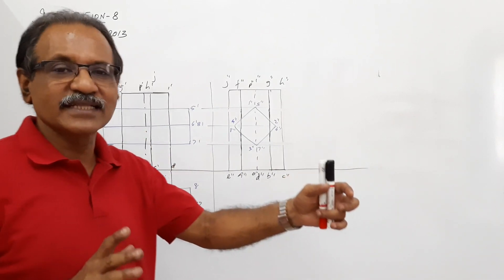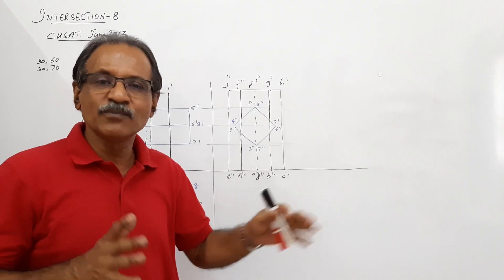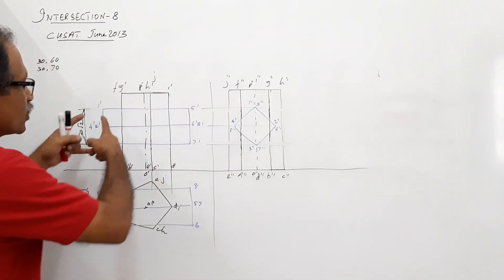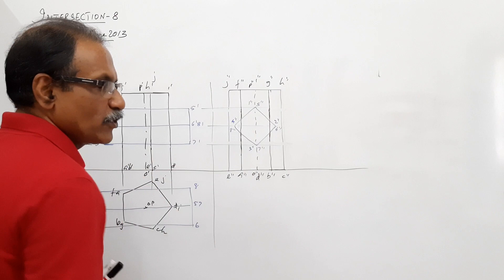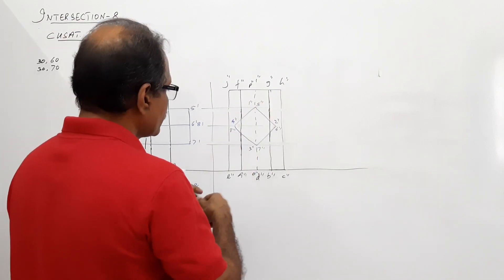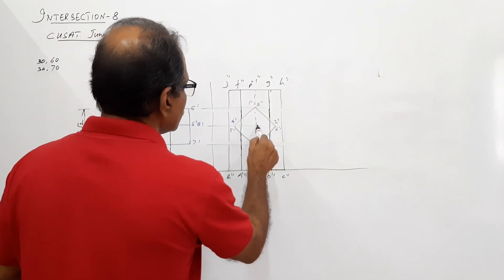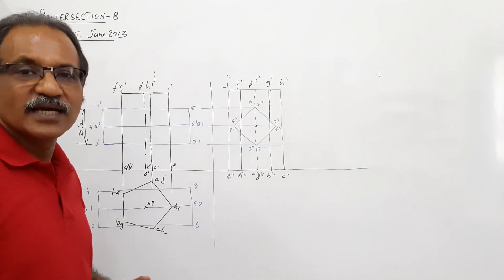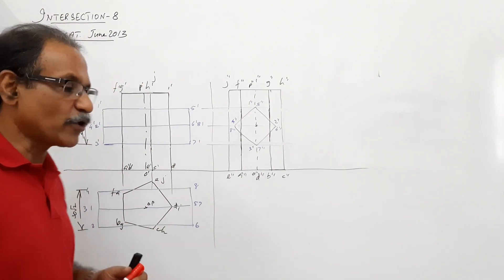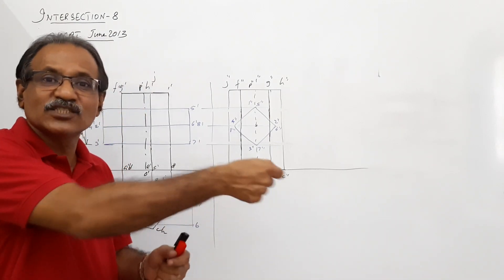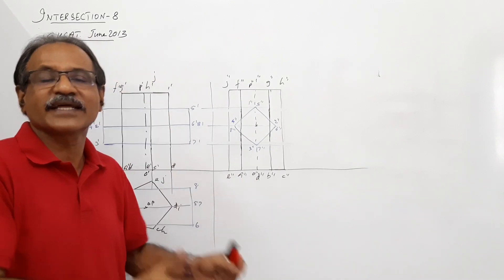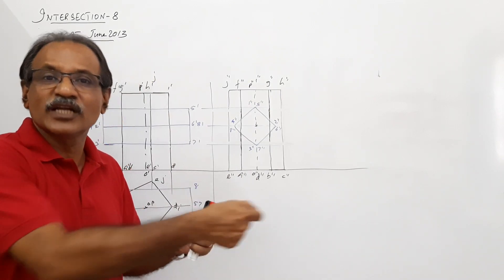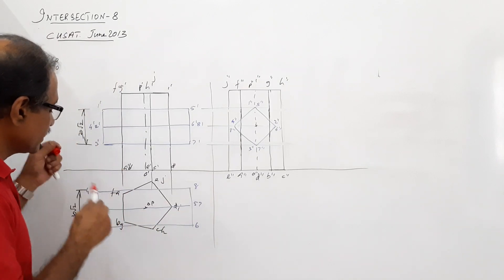The axis length is immaterial in intersection of solids. I have drawn the plan, elevation, and also the end view. The end view passes through the center. Now let us mark the points where the horizontal edges of the horizontal prism cut the vertical prism.